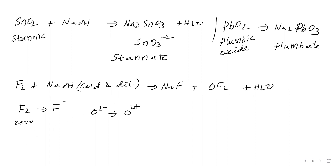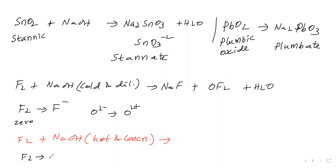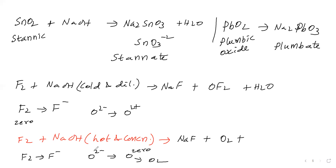Next, with hot and concentrated sodium hydroxide: F₂ reacts so that fluorine (0) becomes F⁻, and oxygen (−2) becomes 0, meaning oxygen gas is produced. Products are NaF, O₂, and water. So the products differ depending on whether sodium hydroxide is cold and dilute or hot and concentrated.